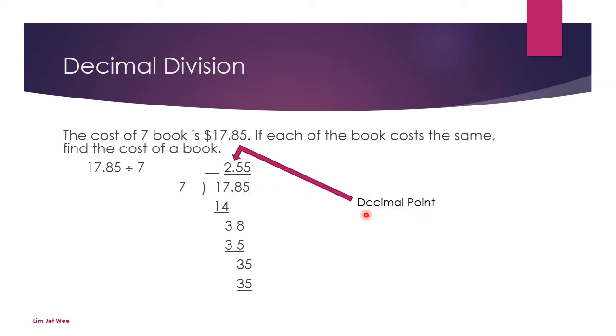Where's the decimal point? It is exactly aligned with the number that you're dividing. So it will be aligned just right here, so the answer is actually 2.55, or in short, two dollars and 55 cents.